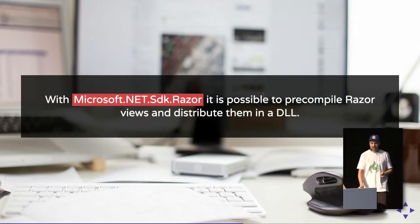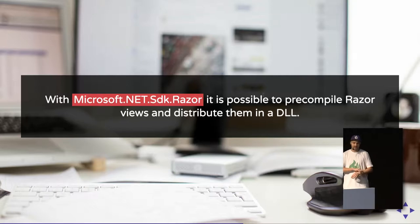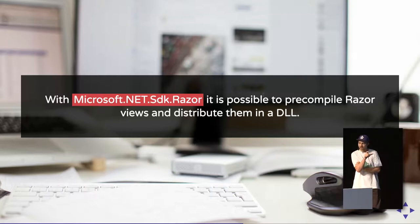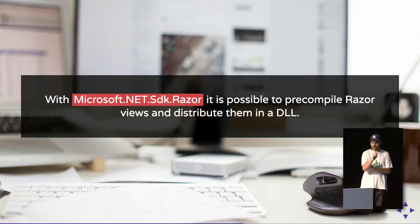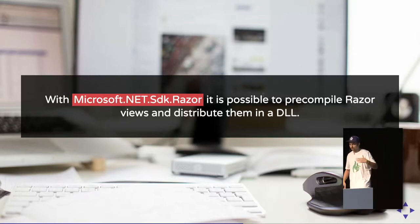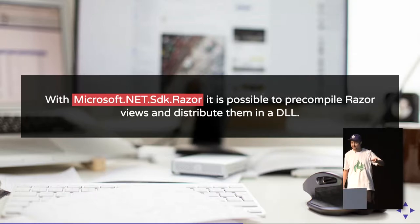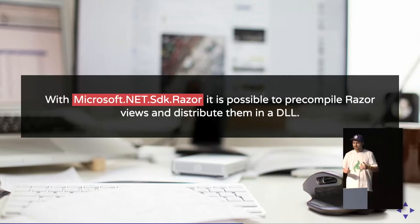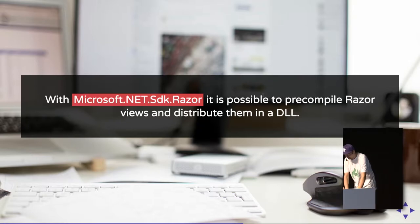A new feature in ASP.NET Core 2.1 is Microsoft.NET SDK Razor. This allows you to build .NET Standard 2.0 class libraries with their own embedded Razor views. Normally you'd use Microsoft.NET SDK in your csproj file. If you change it to Microsoft.NET SDK Razor, you can embed Razor views in your class library and ship them as part of the library.